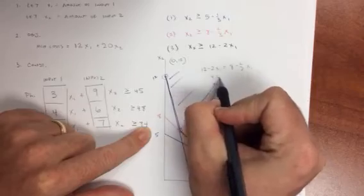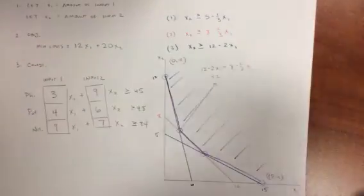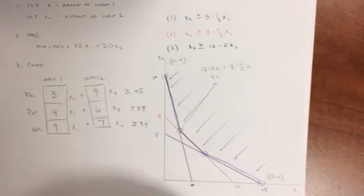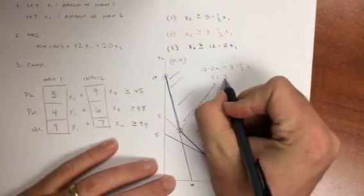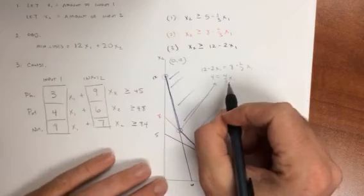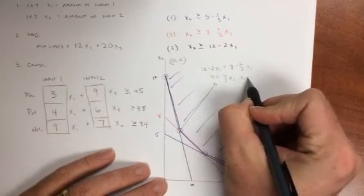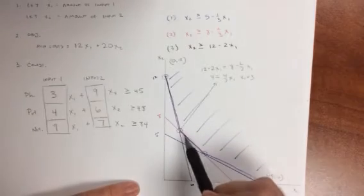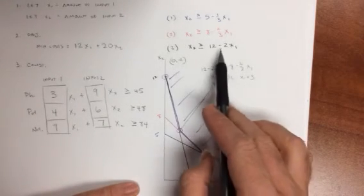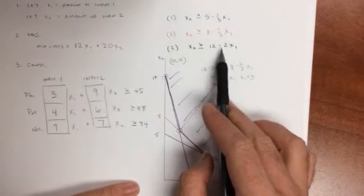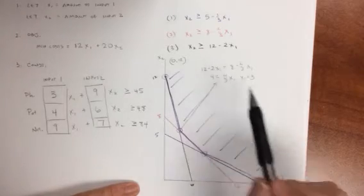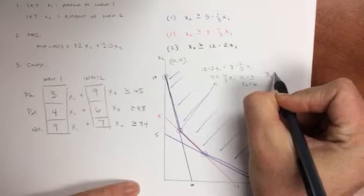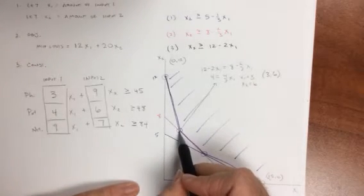So we get 4 is equal to 2 minus 2 thirds, which is about 1 and 1 third. So 4 thirds x1. So x1 equals 3. I plug 3 into either the black or the red line. Let's plug it into the black line. So 6 would be x2. So 3, 6 is this solution here.